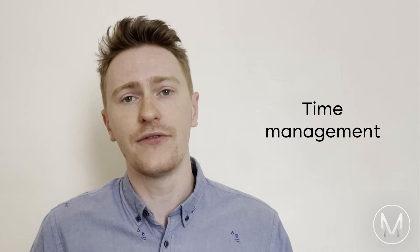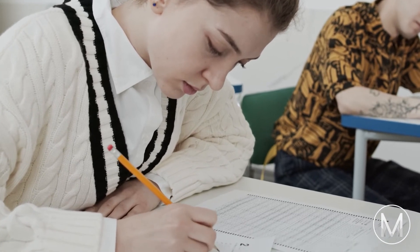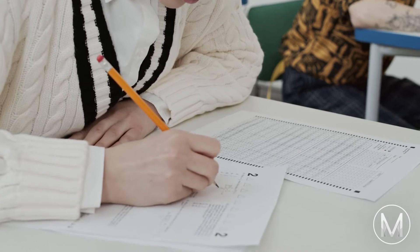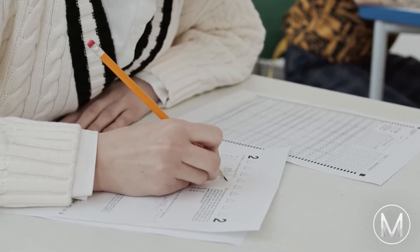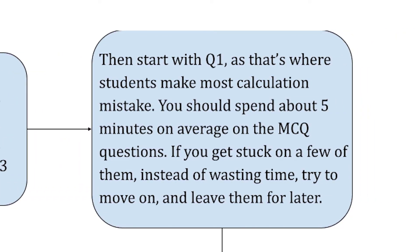One key tip towards the end of your preparation is effective time management. By this point you should have a solid understanding of your weaknesses and strengths, and know which questions are more time-consuming and which you can answer fairly quickly. One of our top MAT scorers recommends first glancing over all of the questions to identify the hard ones where you might need to spend more time. After that, start with question one, as that's where students make the most calculation mistakes. Spend about five minutes on average on each MCQ question. If you get stuck, move on and leave them for later rather than wasting time.